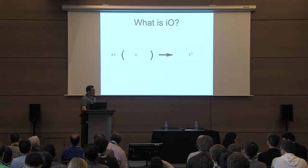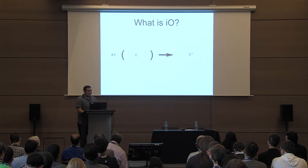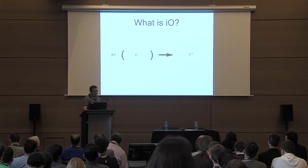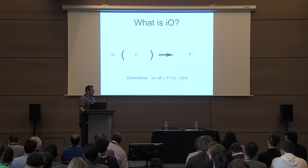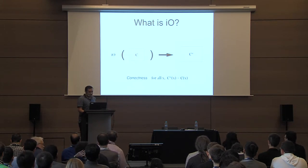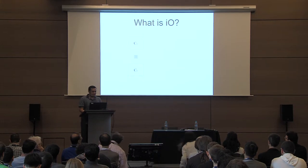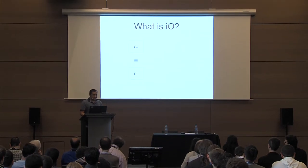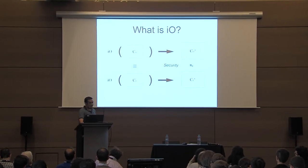So what is indistinguishability obfuscation? It is a polynomial time algorithm which takes in a circuit C and outputs another circuit C* with two guarantees. First, it should preserve functionality: for all inputs X, C*(X) should equal C(X). Second, the security guarantee: if you have two circuits C0 and C1 with identical functionality and approximately equal size, then the obfuscation of C0 is computationally indistinguishable from the obfuscation of C1.